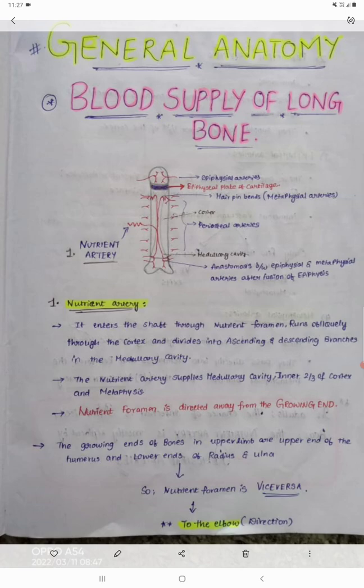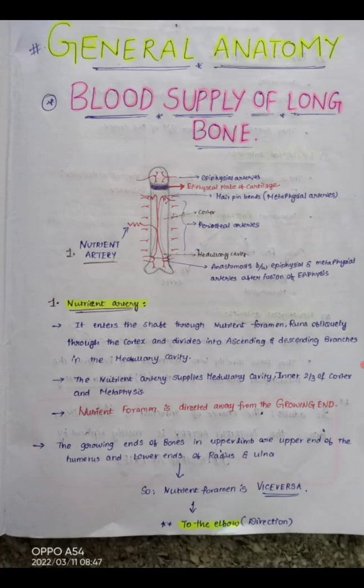The ascending branch ascends up and the descending branch descends down. The nutrient artery supplies the medullary cavity by dividing into branches there, and the inner two-thirds of the cortex and metaphysis are also supplied by this artery. The nutrient artery is directed away from the growing end — this is a very important point to remember.